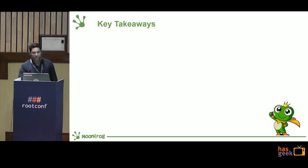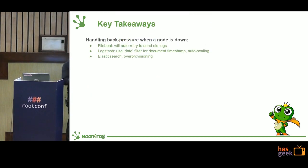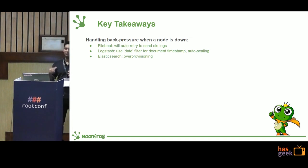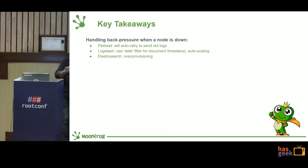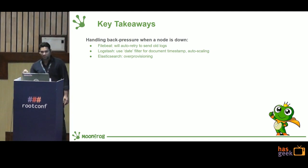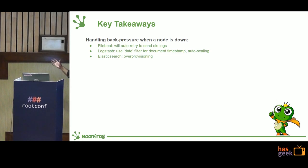For handling back pressure when a node comes back online after downtime — Filebeat keeps retrying so data won't get lost. For Logstash, we use a date filter to ensure the document timestamp in Elasticsearch matches the original log timestamp, so even if logs are ingested later the timestamps are correct. For Elasticsearch, since we are running at 60% capacity with 40% over-provisioning, we can absorb back pressure when a node recovers. We also noted other log analytics platforms exist that we haven't evaluated, and for the ELK upgrade path we are considering blue-green deployment.